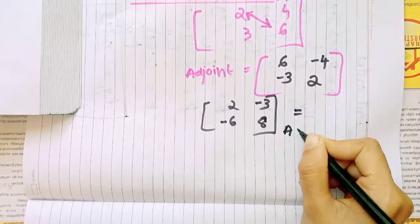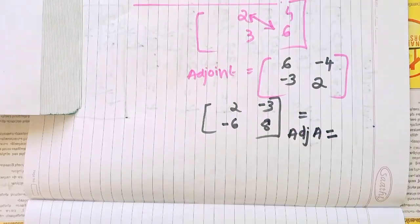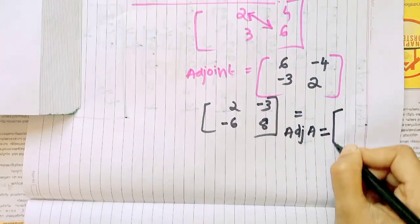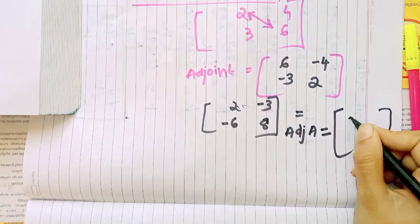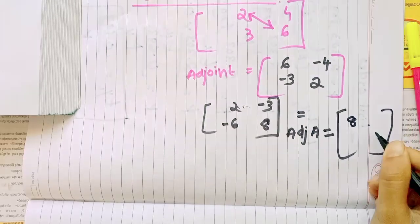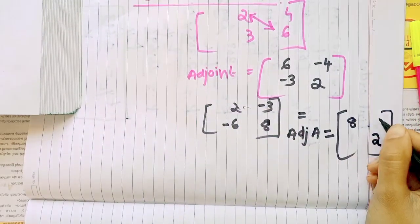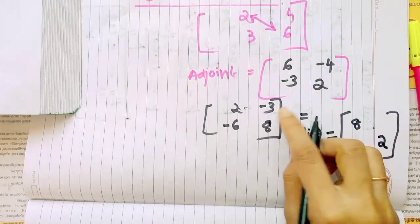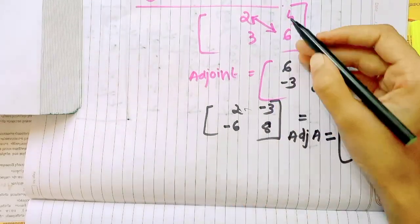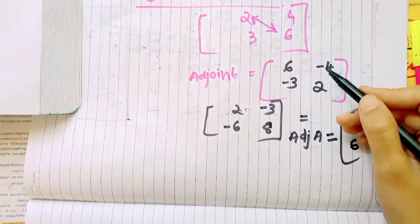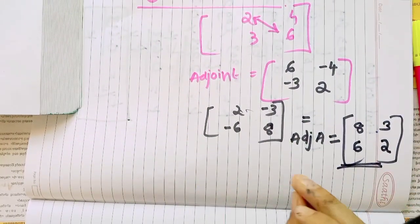This is the Adjoint of A. We change the diagonal elements — swapping the two diagonal elements. The off-diagonal elements become negative 3 and negative 6. This applies to the 2×2 case.